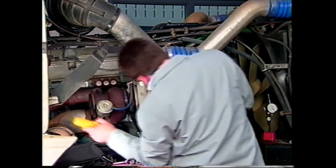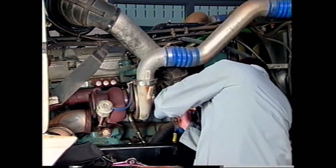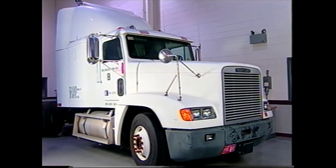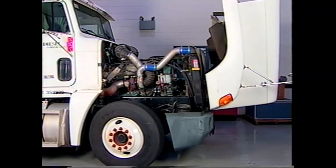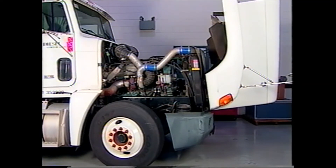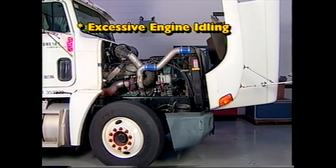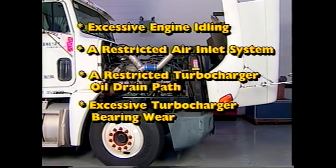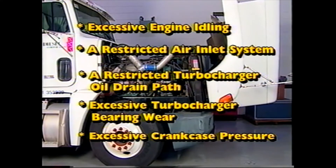Inspect the compressor wheel and housing for signs of oil. If oil is present in the inlet side of the compressor, check the crankcase air vapor separator if equipped. If oil is present at the outlet side of the compressor housing, it is possible that the oil seal at the compressor end of the shaft is leaking. The most common causes of turbocharger oil leaks are excessive engine idling, a restricted air inlet system, a restricted turbocharger oil drain path caused by a blocked oil drain line or sludge buildup in the turbocharger center housing, excessive turbocharger bearing wear, or excessive crankcase pressure caused by a restricted engine crankcase ventilation system or an internal engine concern.